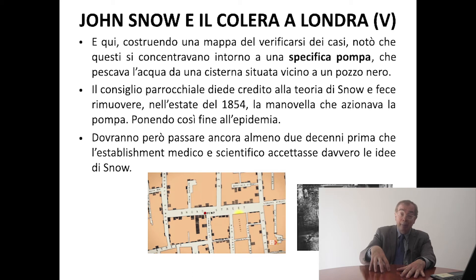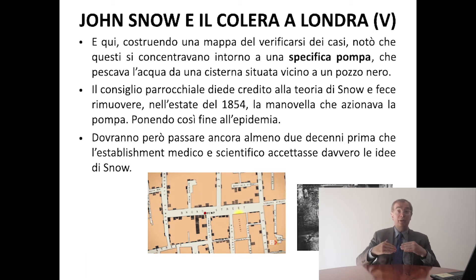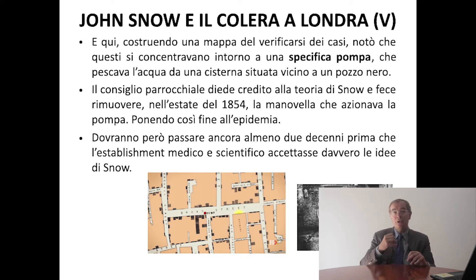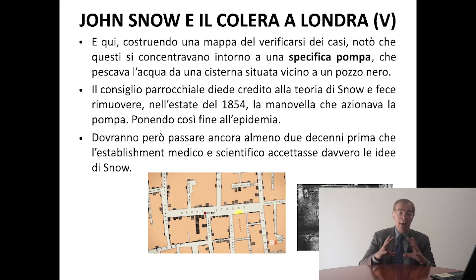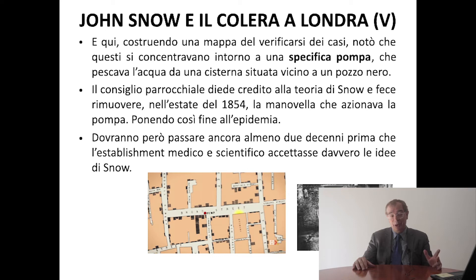Snow concentrò la sua attenzione su una specifica via di Londra, Broad Street, dove c'era un focolaio particolarmente attivo di colera. Fece una mappa geografica e temporale del verificarsi dei casi e notò che i nuovi casi — quelli che oggi chiamiamo casi incidenti — si concentravano tutti intorno a una specifica pompa d'acqua, che pescava da una cisterna situata vicino a un pozzo nero. Appena 170 anni fa l'acqua si beveva così.